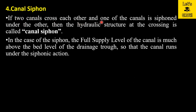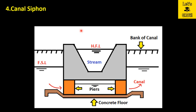The fourth cross drainage structure is the canal siphon. If two canals cross each other and one canal is siphoned under the other, the hydraulic structure at the crossing is called a canal siphon. Here you can see the canal and the stream, where water is flowing under siphonic action. The full supply level of the canal is above the stream bed, so in this case the structure provided is the canal siphon.